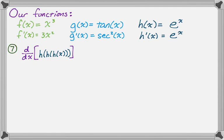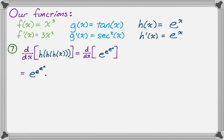Let's do the derivative of h(h(h(x))), which is the derivative of e^(e^(eˣ)). The derivative of e to the something is e to that thing, times the derivative of that inner thing. Working through: e^(e^(eˣ)) times e^(eˣ) times eˣ. Three functions composed, three derivatives taken, giving us that product.